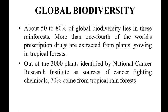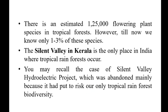Out of the 3,000 plants identified by the National Cancer Research Institute as sources of cancer-fighting chemicals, 70 percent come from tropical rainforests. There is an estimated 1,25,000 flowering plant species in tropical forests — all kinds of plant species are distributed in tropical forested regions.